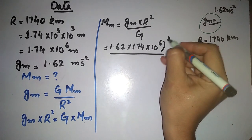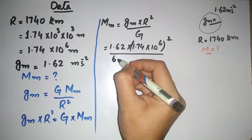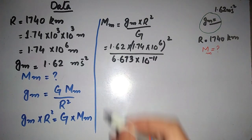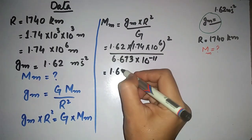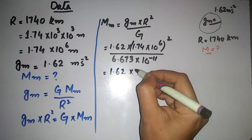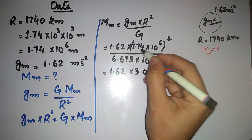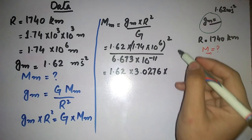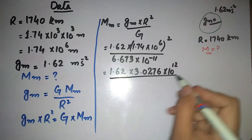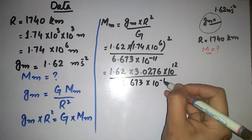Gravity on the surface of moon equals g × r² divided by gravitational constant. The gravitational constant G = 6.673 × 10⁻¹¹. Now we compute: 1.62 multiplied by (1.74)² — that is, 1.74 × 1.74 = 3.0276. Since (10⁶)² = 10¹², we get 3.0276 × 10¹². We divide by 6.673 × 10⁻¹¹.